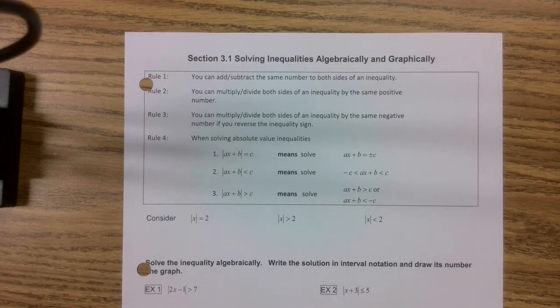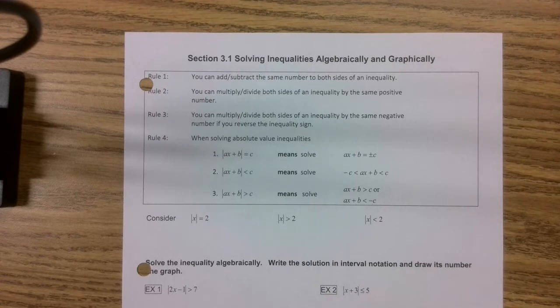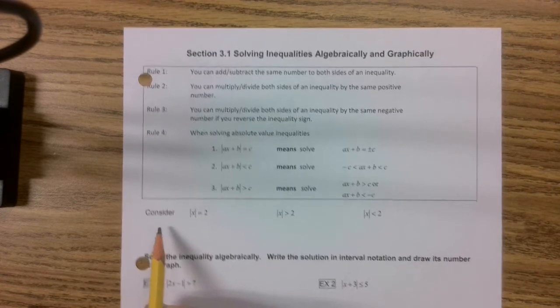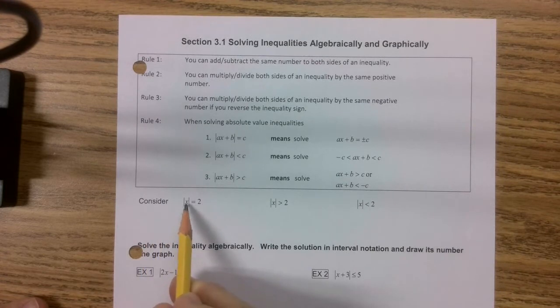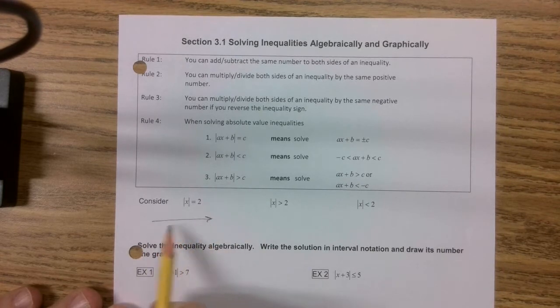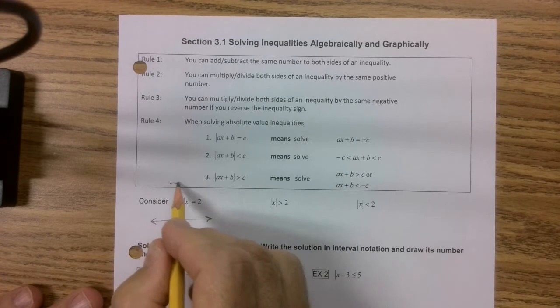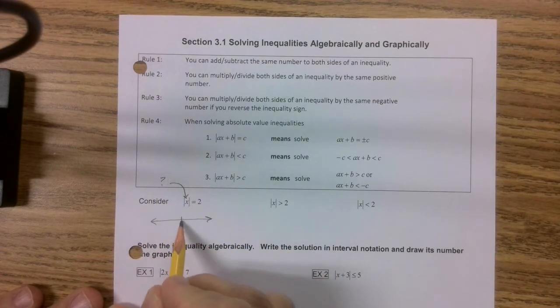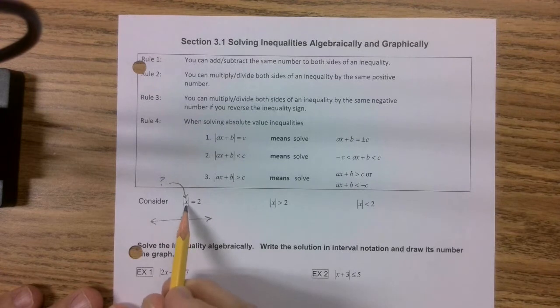Unit 3, Pre-Calc B, Section 3-1, Solving Inequalities Algebraically and Graphically. If you just consider, as it says, the absolute value of some number is 2, what you have to remember is this is actually asking you what values on a number line are exactly 2 units away from 0. That's what the absolute value means.